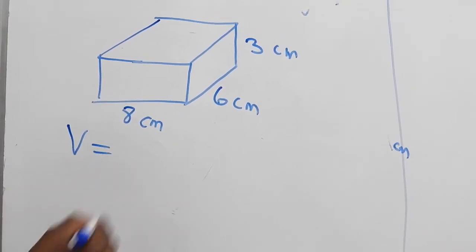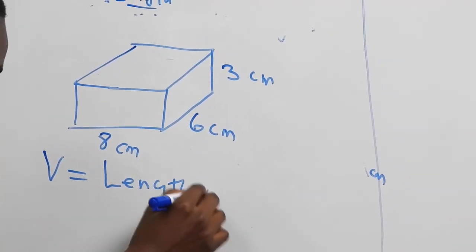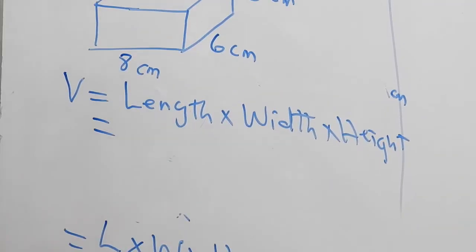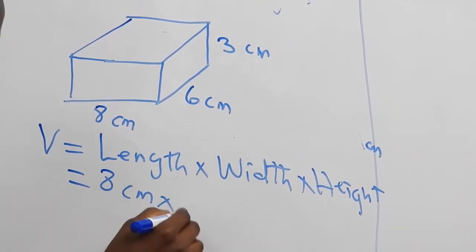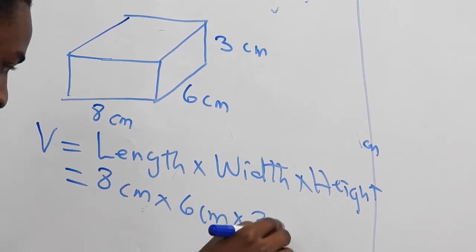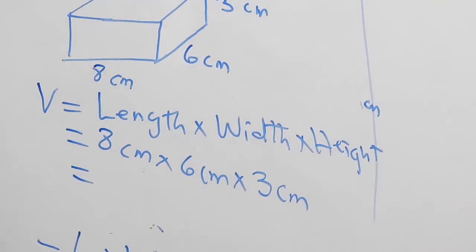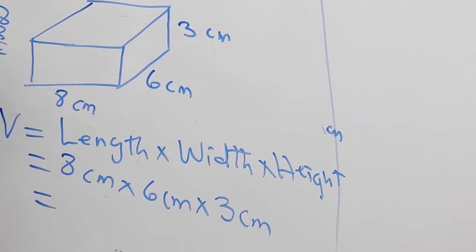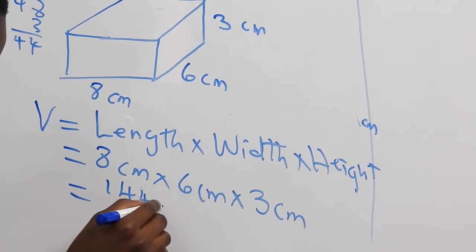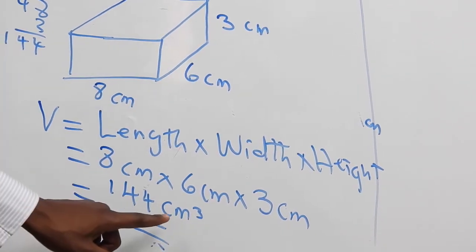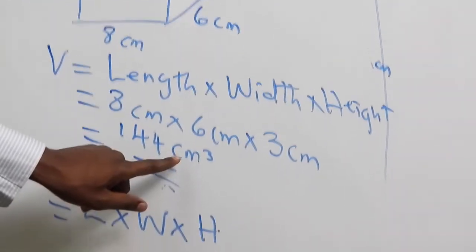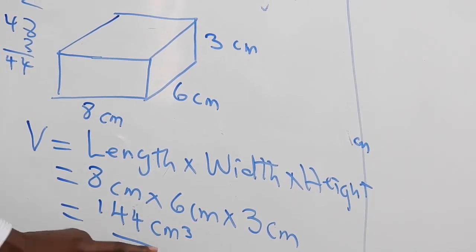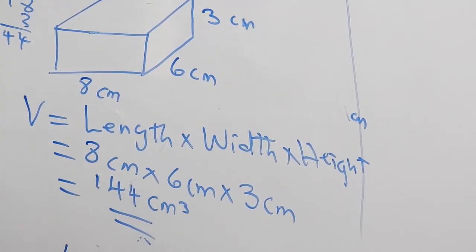We have been given that the length is 8 centimeters, the width is 6 centimeters, and the height is 3 centimeters. The volume will be given by length times width times height, which will be equal to 8 cm times 6 cm times 3 cm. That is 8 times 6 is 48, times 3 is 144 cm³. When writing the volume, we must write the units, which in this case is centimeters cubed, or cubic centimeters.